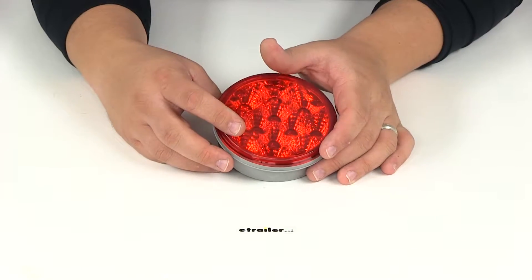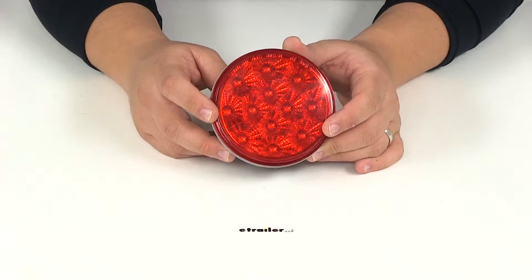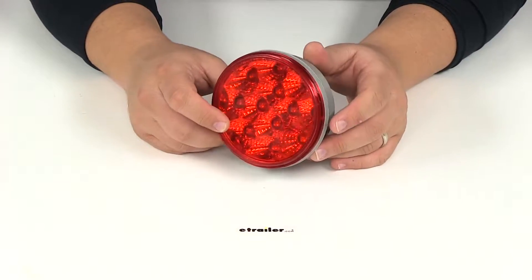The red trailer light is going to serve three functions on trailers less than 80 inches wide: stop, turn, and tail light functions.